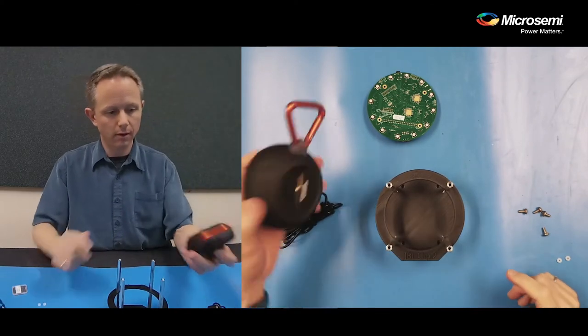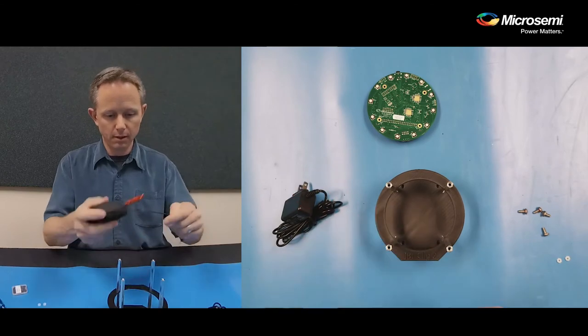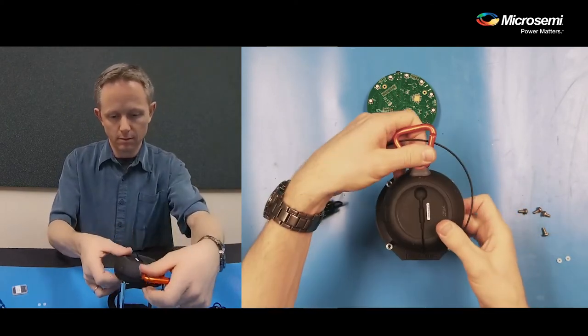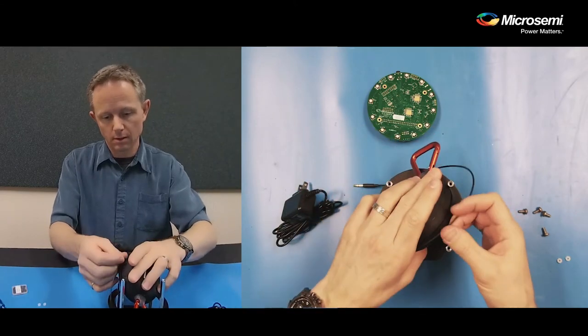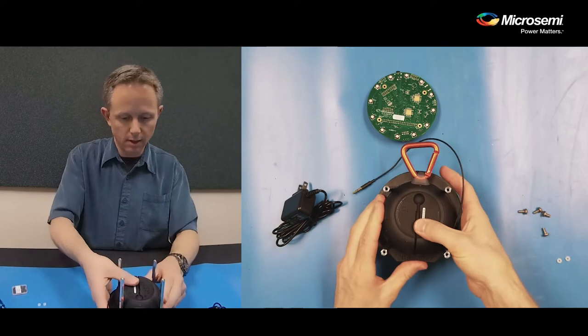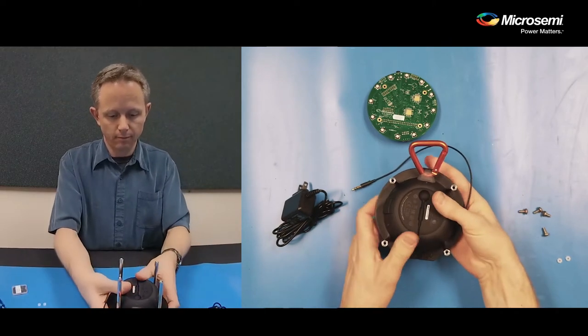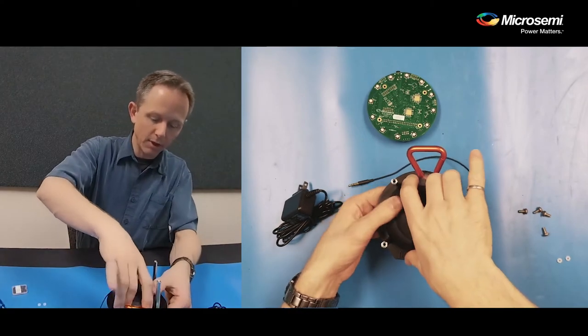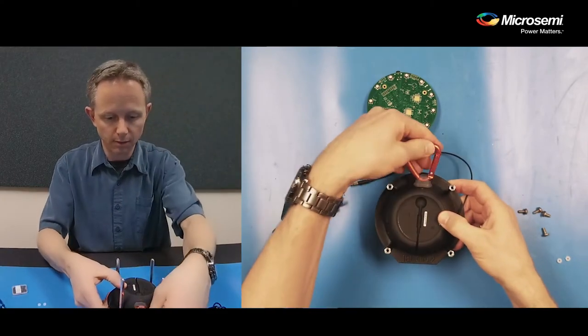Now before we put the top layer on, we need to put in our JBL speaker. You don't need the full length of the wire but you need some of it sticking out. It is a stiff fit so we don't get any vibrations when the music is actually playing.